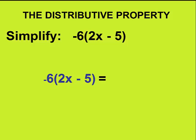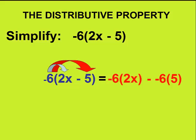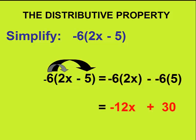We will take the negative 6, multiply it to the 2x. Then we'll take negative 6 and multiply it to negative 5. We will simplify the terms on the right-hand side. Negative 6 times 2x gives us negative 12x. And negative 6 times negative 5 gives us plus 30.